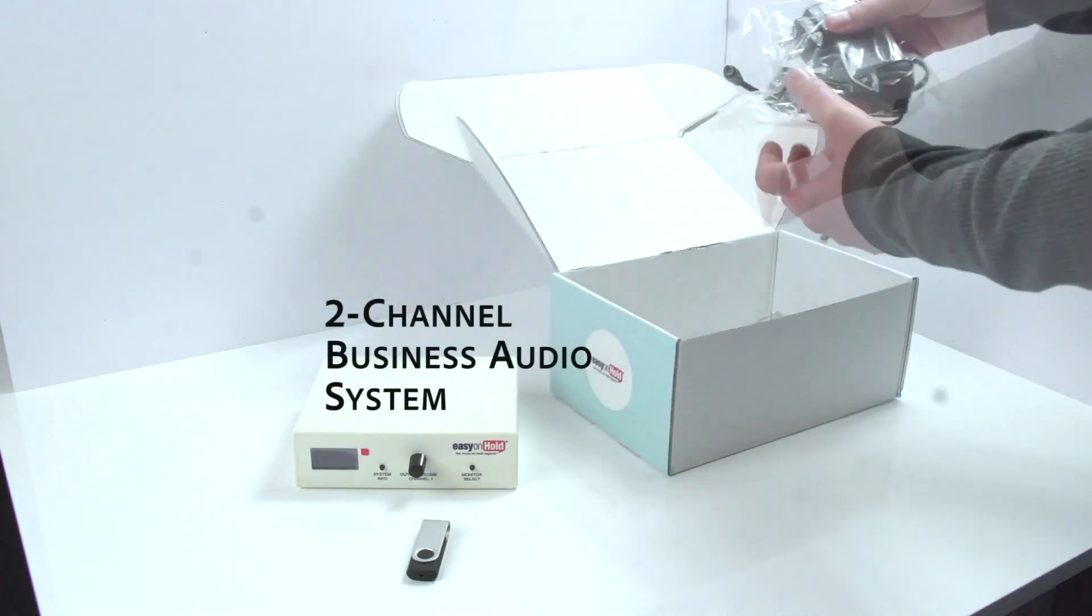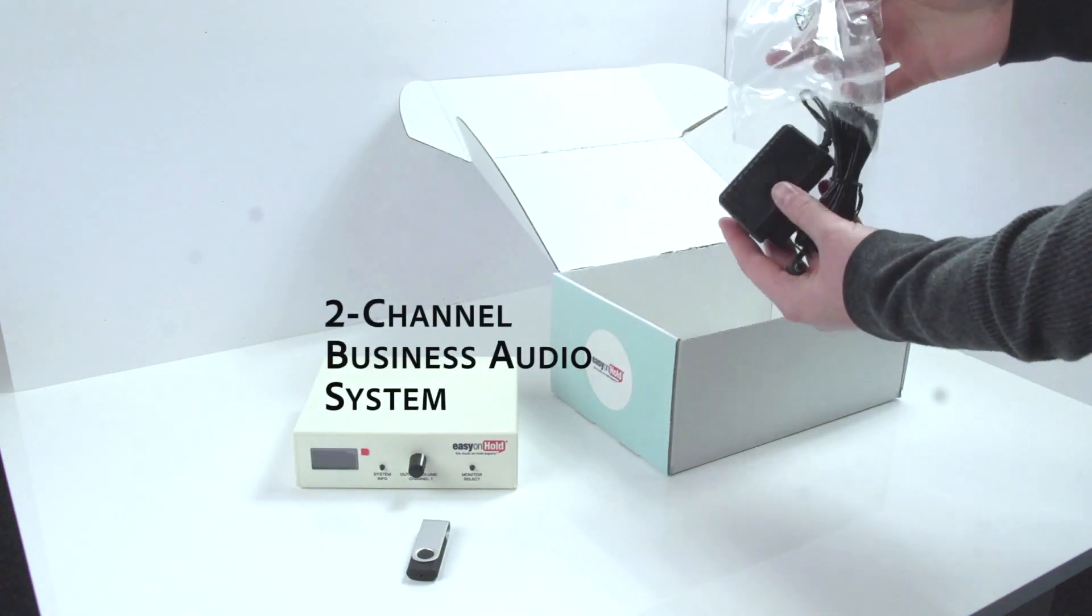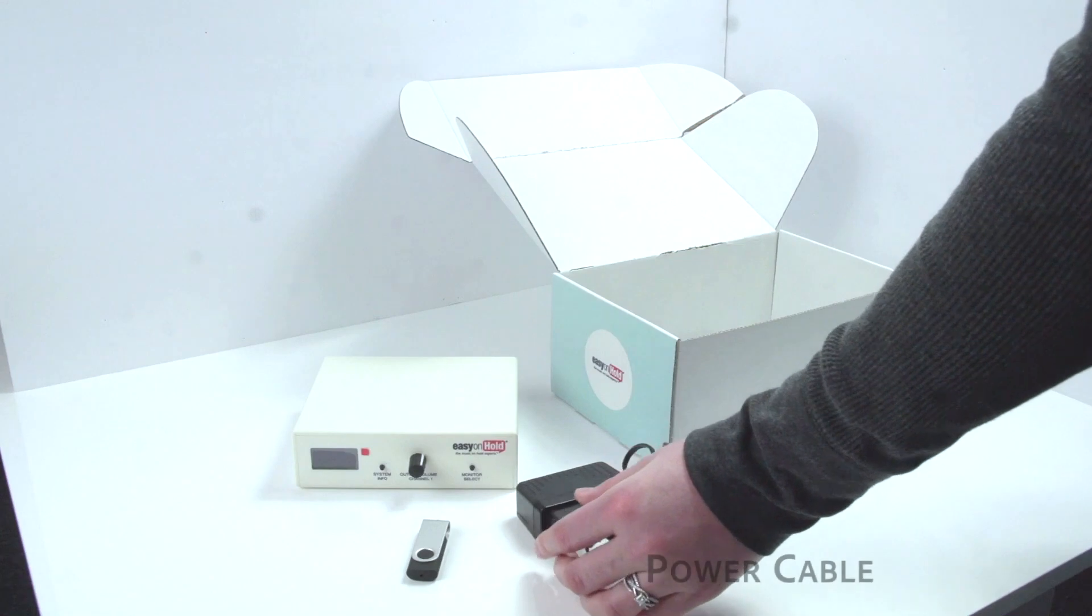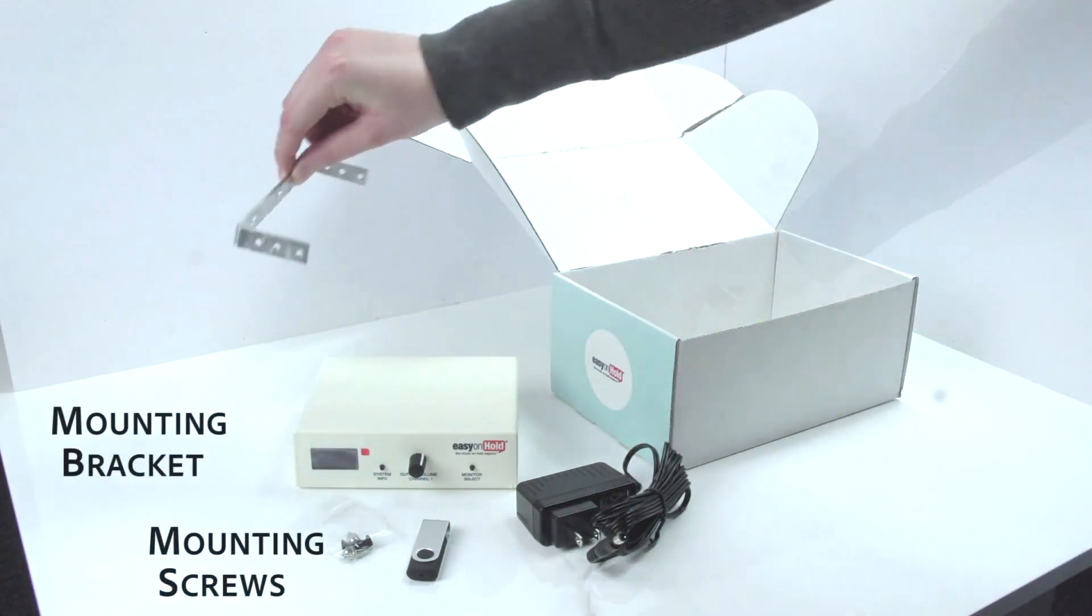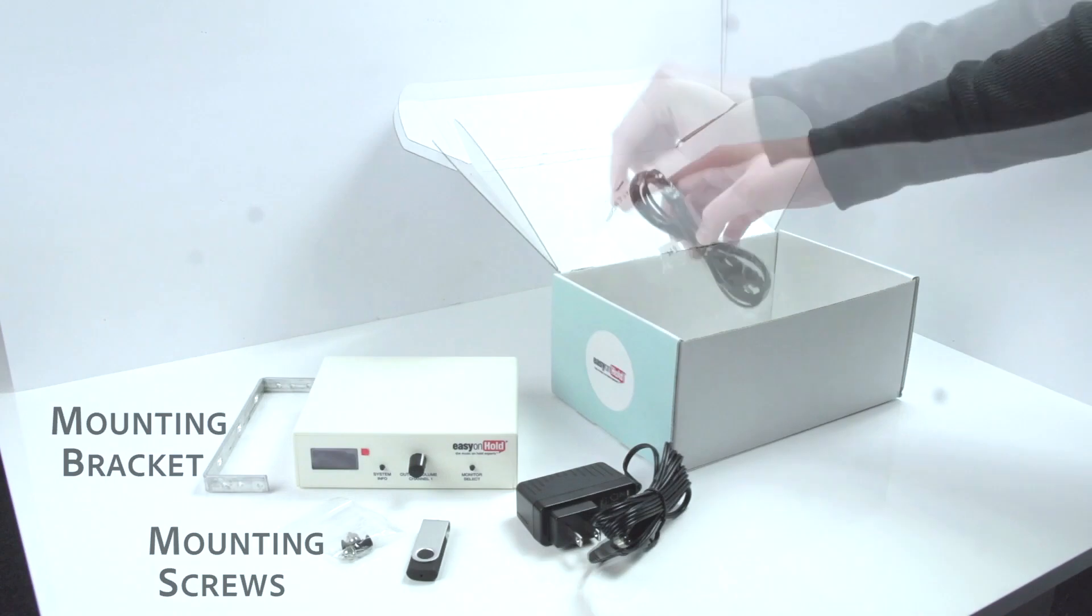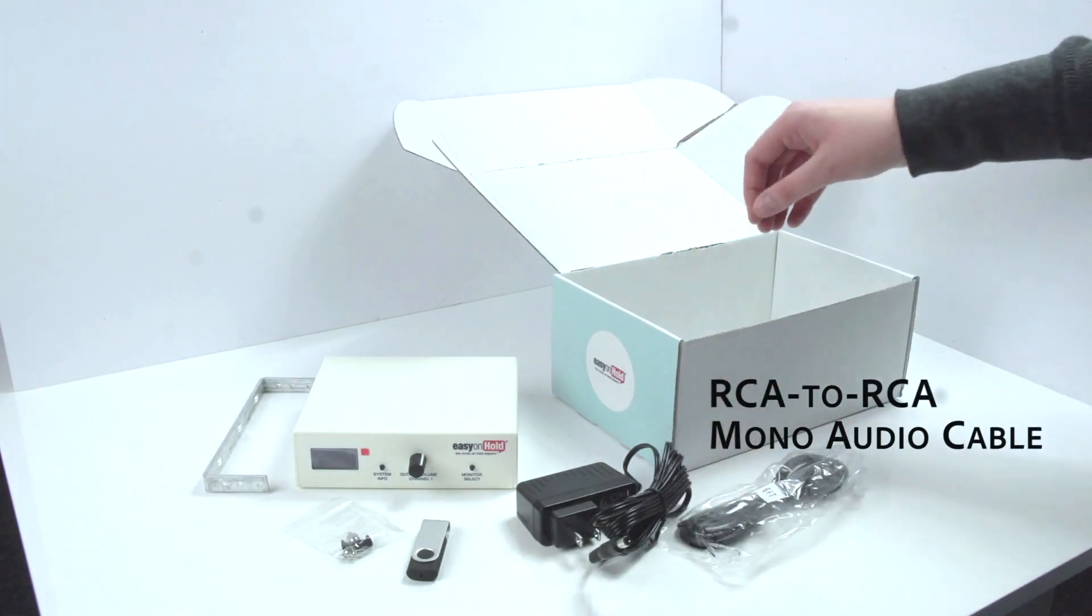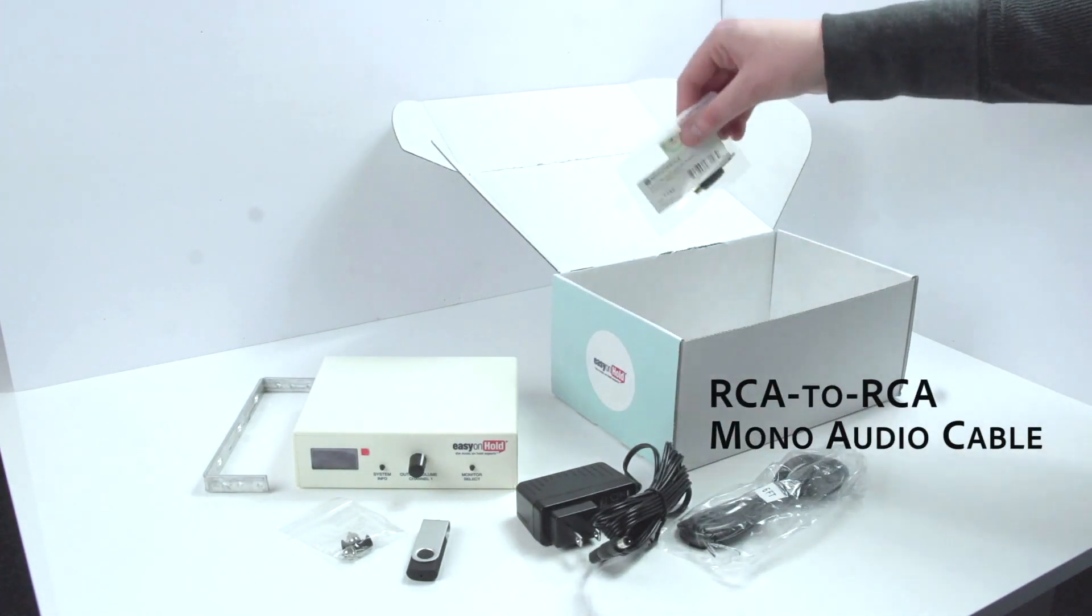In the box, you'll receive the USB drive, the 2-Channel Business Audio Player, the power cord, mounting bracket and screws, an RCA-to-RCA audio cable, and an RCA-to-3.5mm audio adapter.